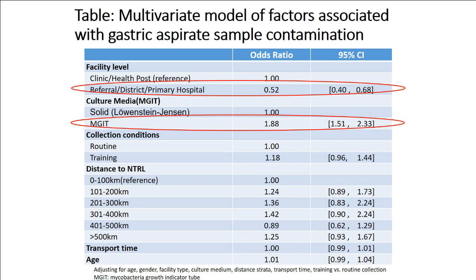Cutting right to the multivariable results: this model shows factors associated with gastric aspirate sample contamination. We looked at sex, age, distance from the hospital, and other variables. Two items in the multivariable model came out as significantly associated with contamination. First, if a sample came from a referral, district, or primary hospital, there was a protective effect against contamination. Conversely, if a sample came from a clinic or health post in Botswana, there was an increased risk of contamination — the smaller the facility, the higher the risk.